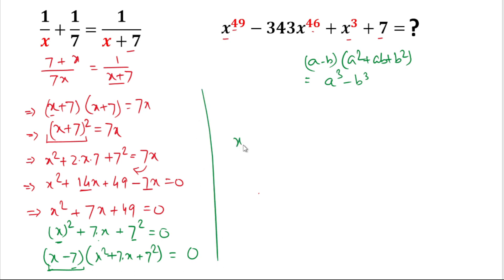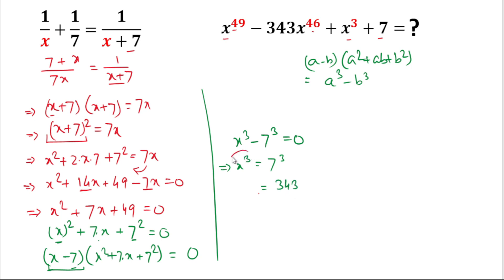Here a is x and b is 7, so we can write x³ − 7³ = 0. From here we can calculate x³ = 7³, and since 7³ = 343, the value of x³ is 343.